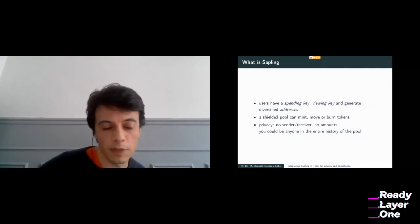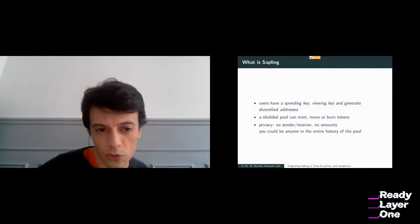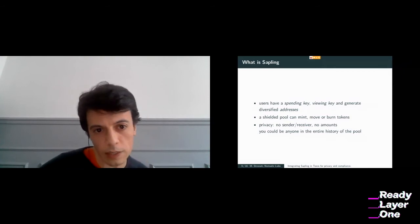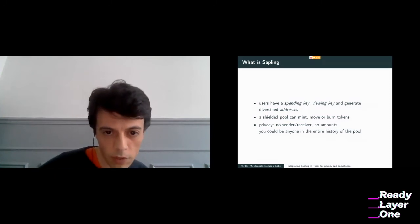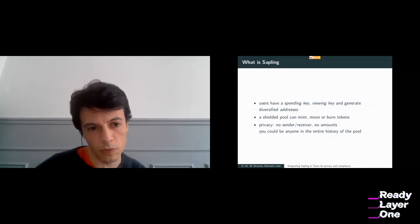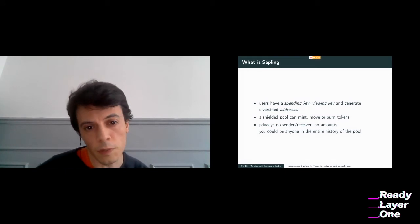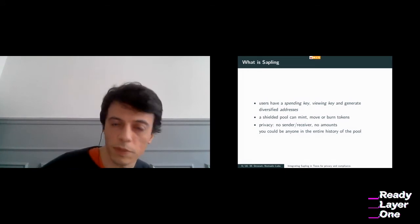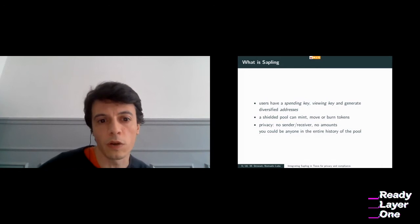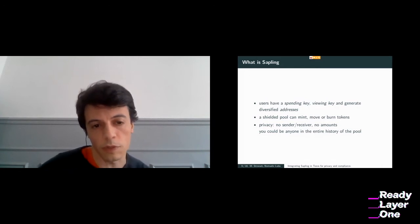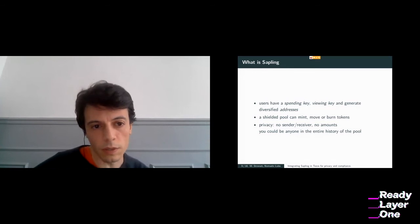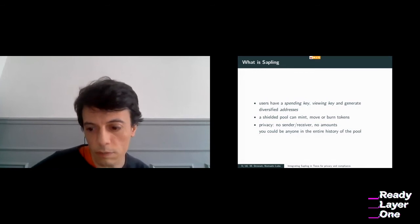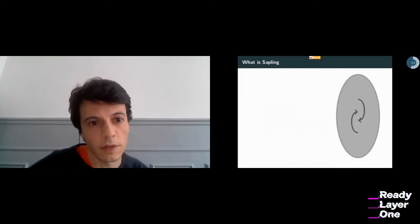What we mean by privacy-preserving: concretely, the transactions are going to be confidential — they will not show the amount being moved — and the sender and receiver will not be visible, so it's completely anonymous. This is one of the strongest notions of privacy you can have for blockchains.